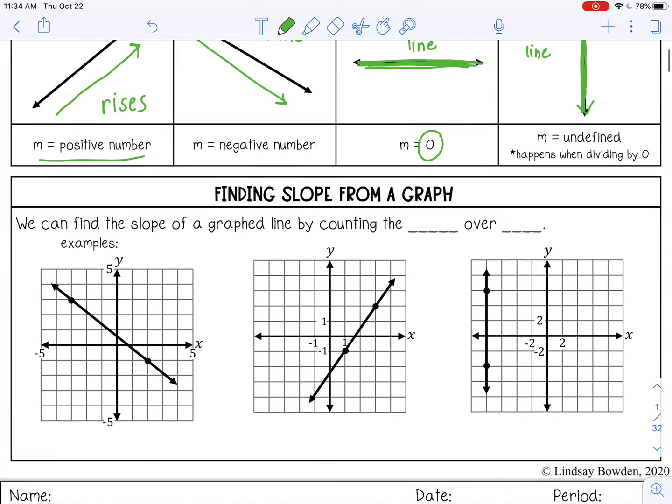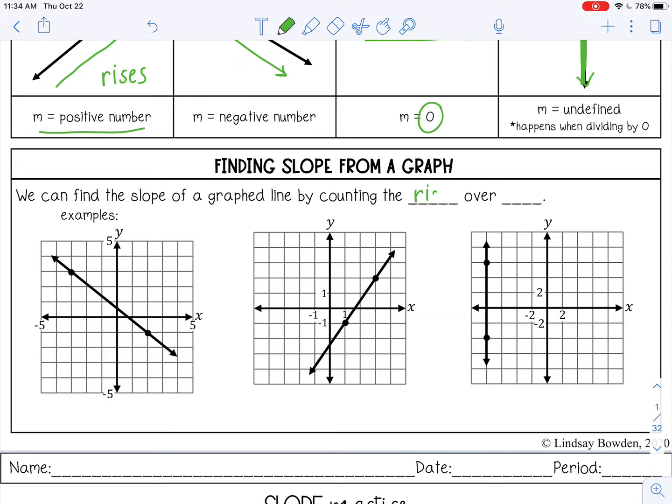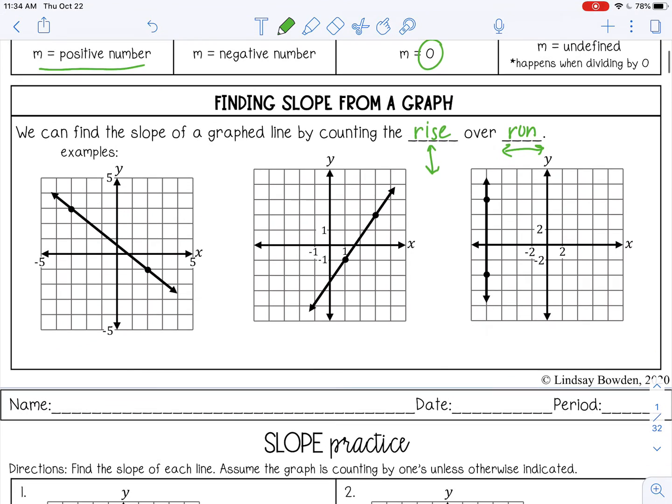So let's talk about finding slope from a graph. We can find slope of a graphed line by counting the rise over the run. And rise means how far it is up and down, vertical distance, the change in y. Run means how far it is horizontally, the change in x.